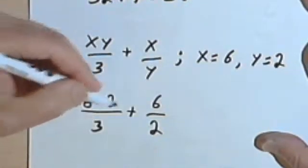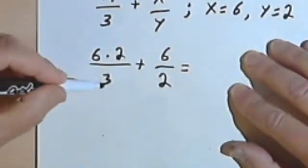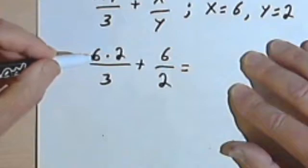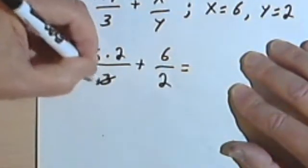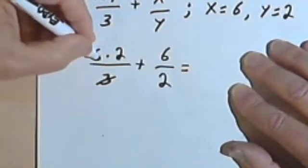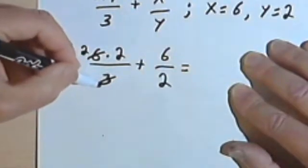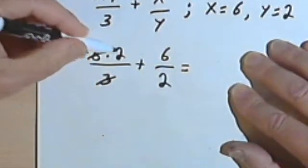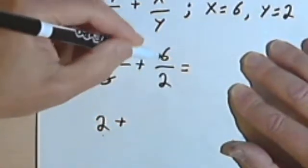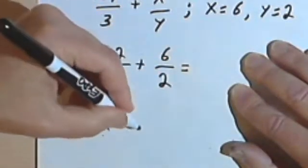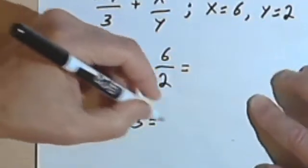Now I've just got to simplify my fractions. I'm going to simplify this fraction by dividing the 3 and the 6 by 3. So 6 divided by 3 is 2, and 3 divided by 3 is just 1. Now I can go ahead and multiply 2 times 2, so that's just going to give me 2. And then simplifying 6 over 2 — 6 divided by 2 is 3. So I've got 2 plus 3, and 2 plus 3 is 5.